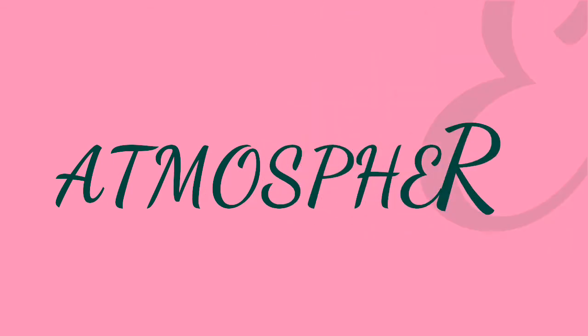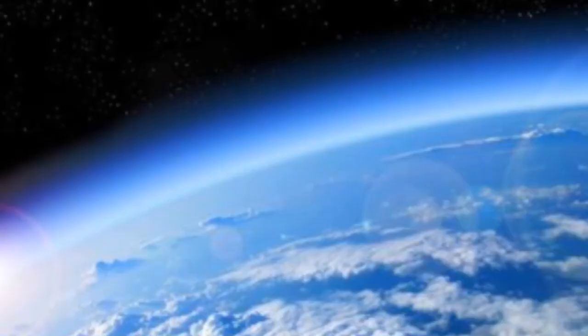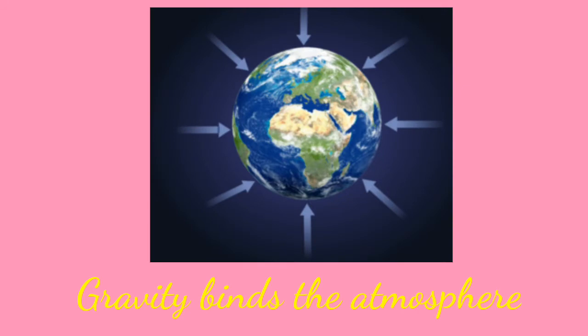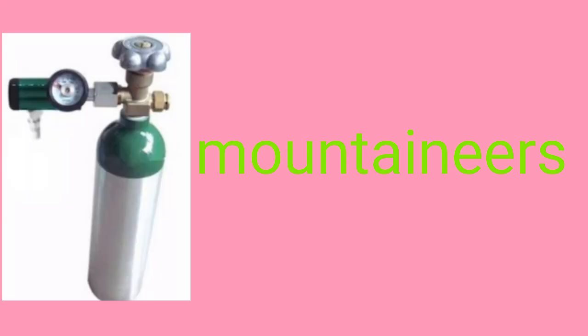Atmosphere. Our earth is surrounded by a blanket of air called the atmosphere. The atmosphere extends up to a height of about 300 km above the earth's surface. As we go higher in the atmosphere, the amount of air becomes lesser. That is why mountaineers carry oxygen cylinders with them.